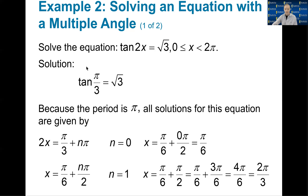Example two: solving an equation with a multiple angle. I need to solve tan(2x) = √3 for values between 0 and 2π. If x is between 0 and 2π, then 2x can be some value between 0 and 4π. So I'm thinking about all solutions within two revolutions of the unit circle.